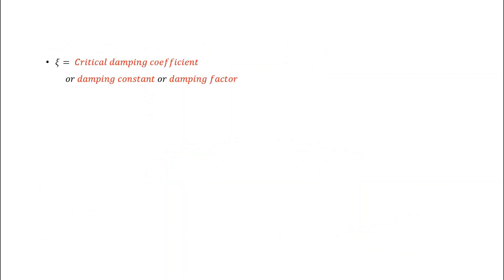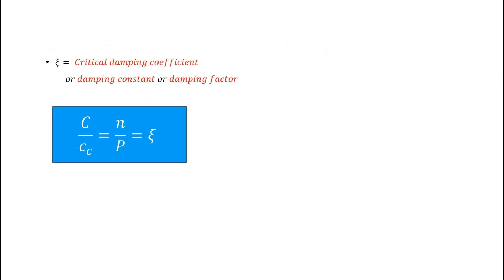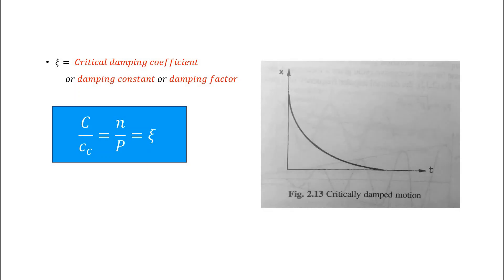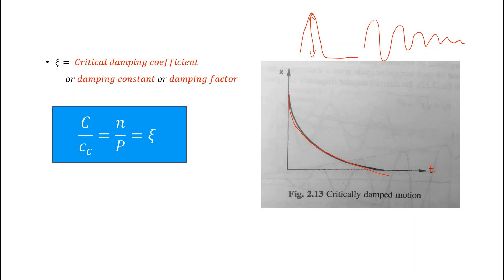The critical damping coefficient or damping factor, denoted zeta (ζ), is equal to n/p. The figure for critical damping shows displacement x against time t, where the displacement becomes zero asymptotically with time — there is no oscillating decay curve, just a smooth approach to zero.